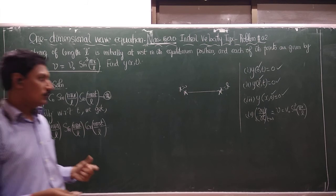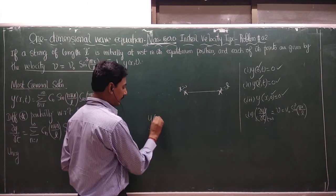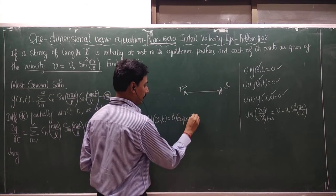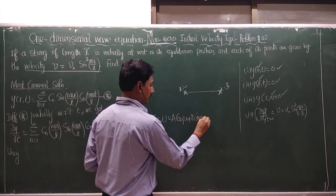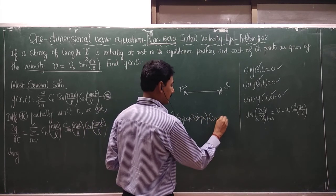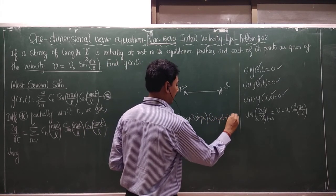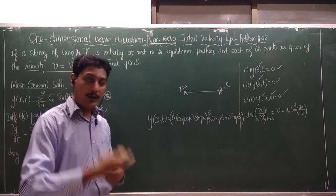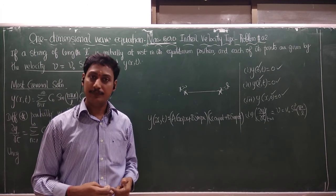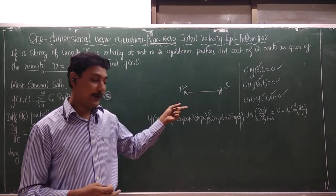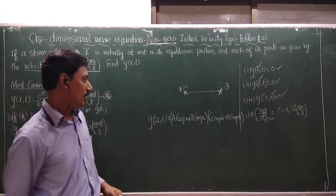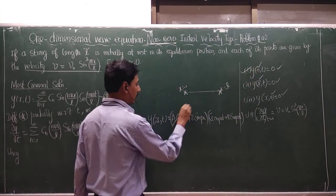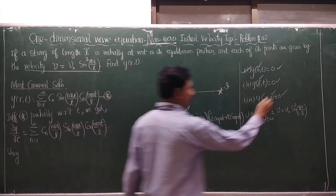The correct solution form is y(x,t) equal to (A cos px + B sin px)(C cos pat + D sin pat). Please refer to Problem 1 under the non-zero initial velocity type for full derivation of concepts. Applying the first boundary condition gives A equal to zero, the second gives p equal to nπ/L.